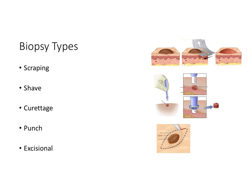Biopsies are when we take a sample of skin — sometimes just a small portion of a large lesion, or sometimes trying to remove an entire lesion. Scraping is where you're just getting superficial cells from the surface. A shave biopsy uses a curved razor blade that goes straight across to remove a raised lesion — it could be just to take a biopsy of the top, or to try to remove the entire lesion, which is then sent to the lab for analysis.